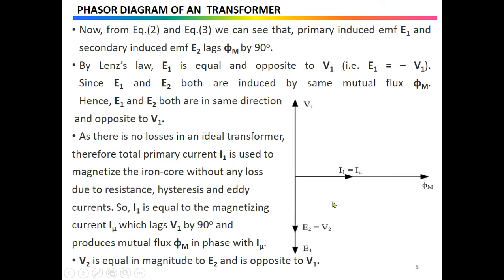Since there is no loss in the ideal transformer, the total primary current I1 is used entirely to magnetize the iron core, without any loss due to resistance, hysteresis, or eddy currents. Therefore I1 equals the magnetizing current Iμ, which lags V1 by 90°. In the phasor diagram, I1 is in the direction of Φm and equals Iμ; Φm is in phase with Iμ. Also, V2 equals E2 in magnitude and is opposite to V1.